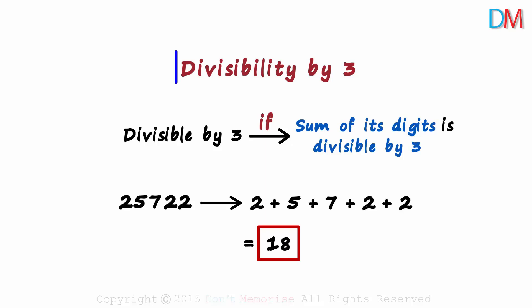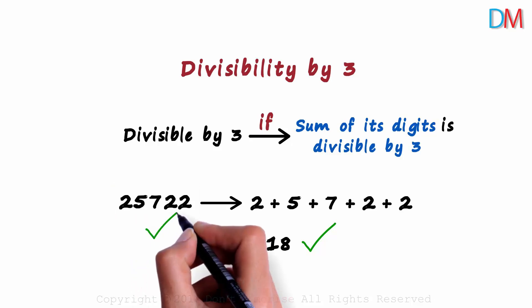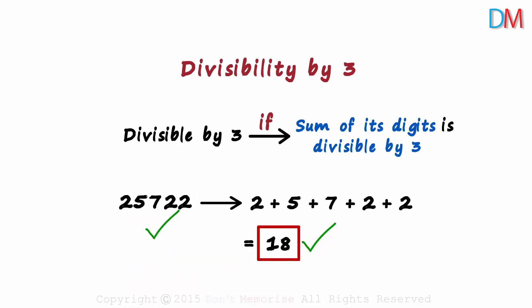Is this sum divisible by 3? Yes, 18 is divisible by 3. Hence this number is also divisible by 3. If the sum is not divisible by 3, then the number is not divisible by 3.